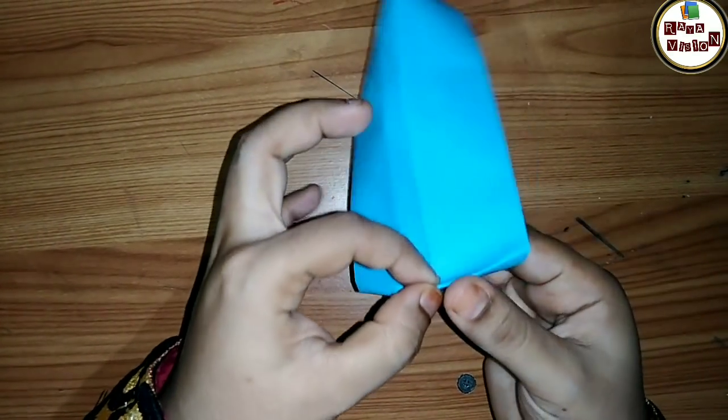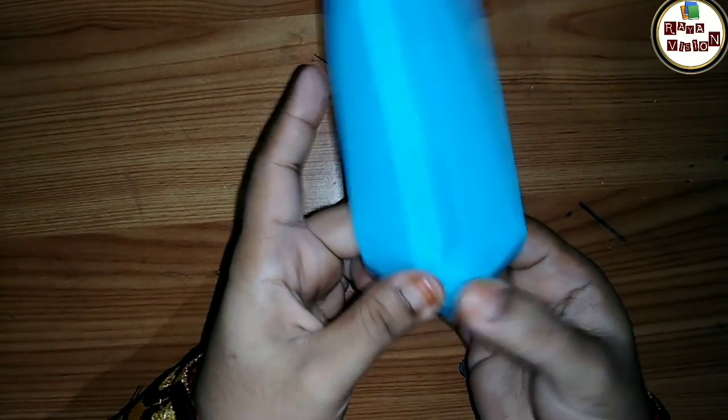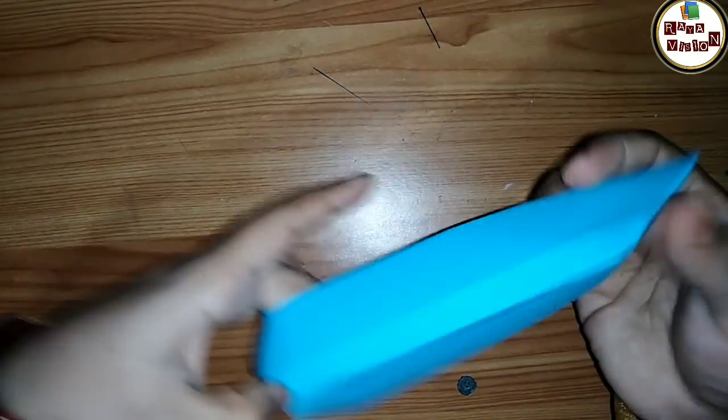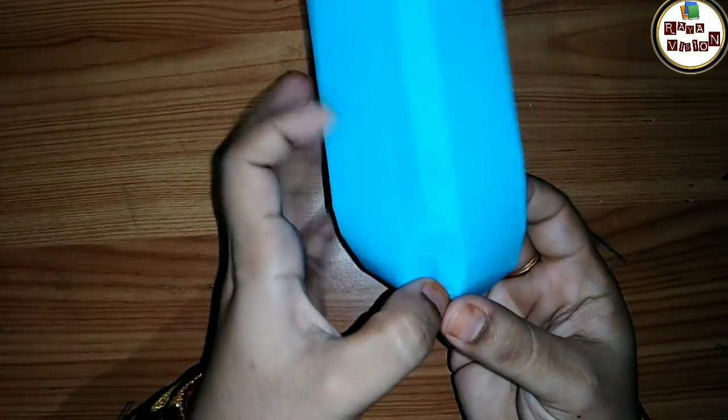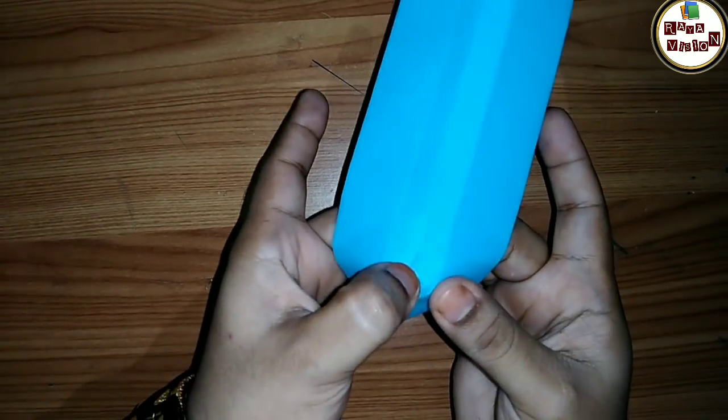Otherwise, while you keep it on a table, it will sometimes fall down. So you have to make both sides of the bottom like this, just fold it and press it.